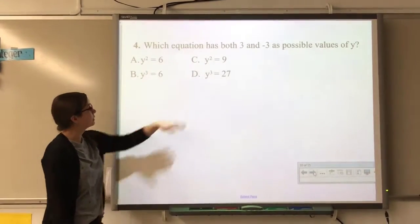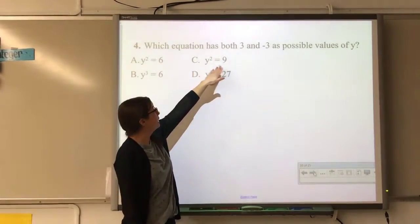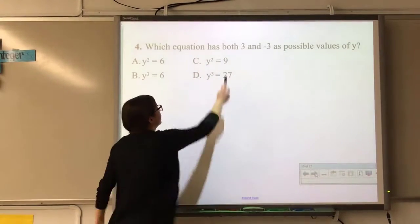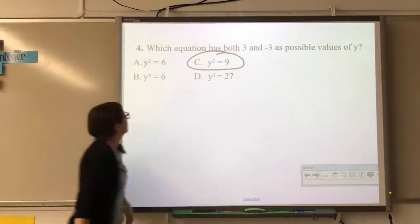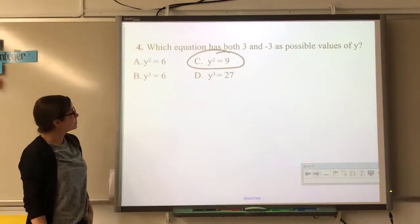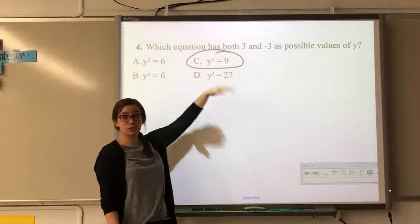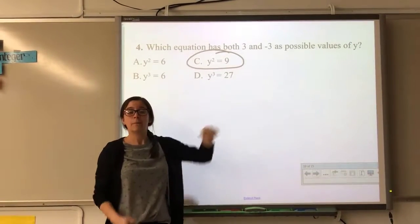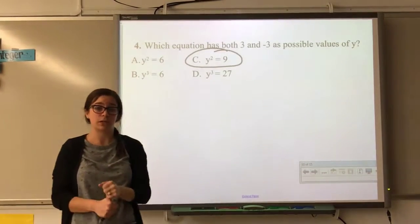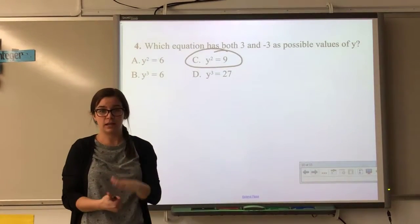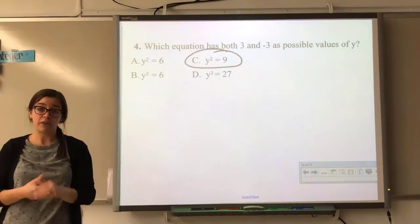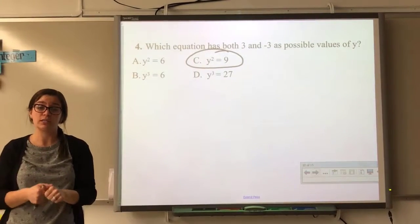Which equation has both 3 and negative 3 as possible solutions? 3 squared is 9 and negative 3 squared is also 9 — that works. 3 cubed is 27 but negative 3 cubed is negative 27 — that doesn't work because a negative times a negative times a negative gives a negative. So the answer should be c — the equation involving x squared.